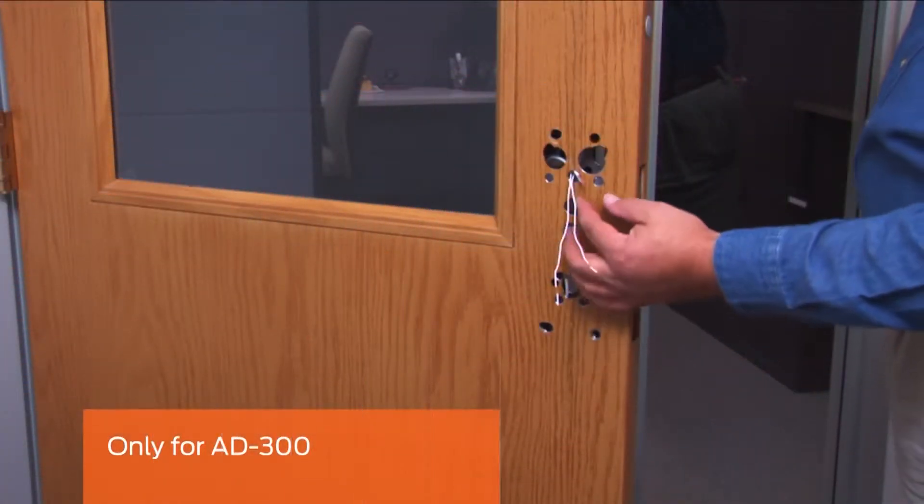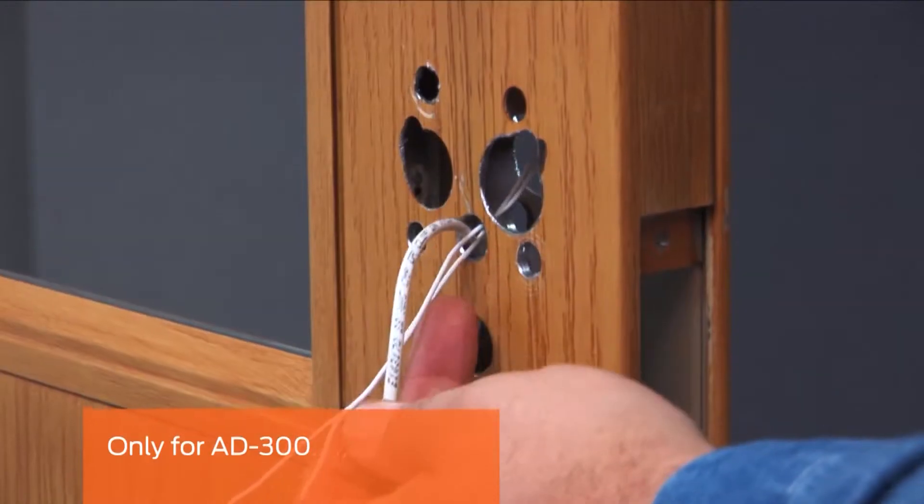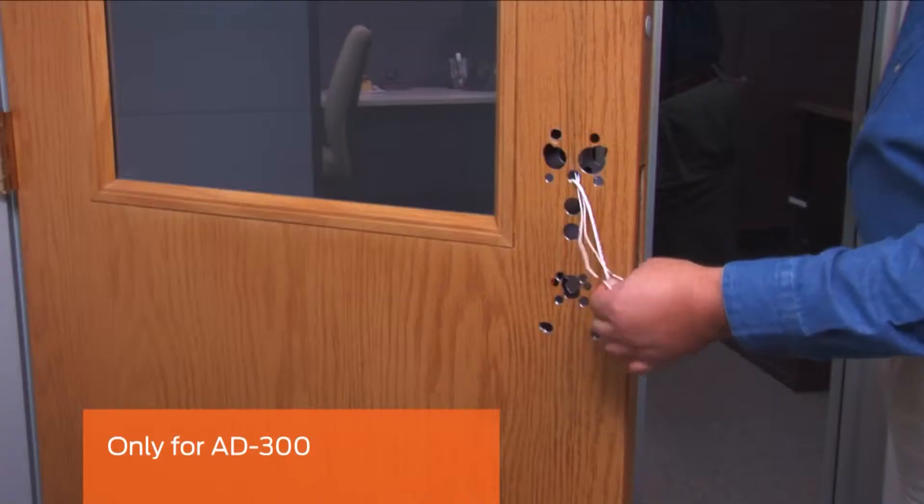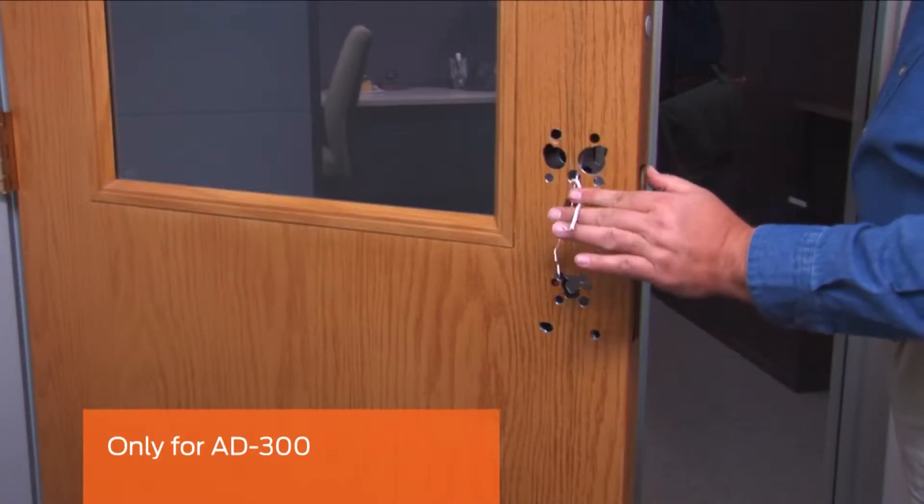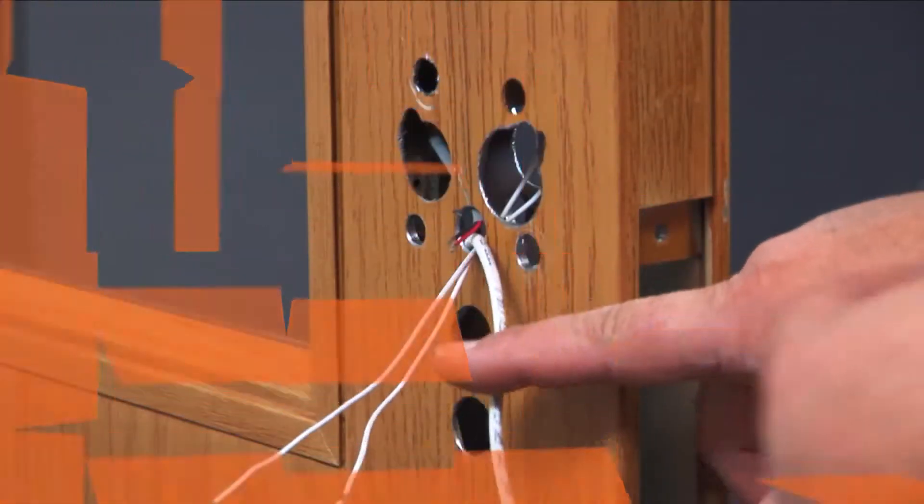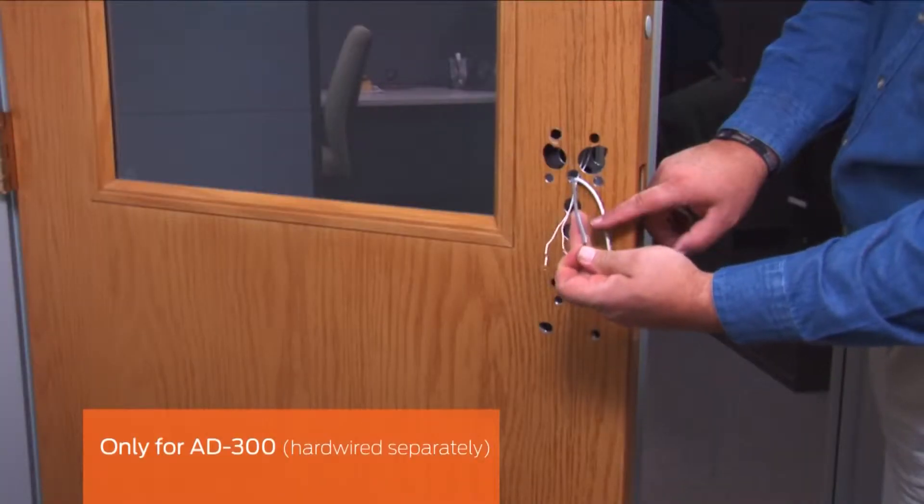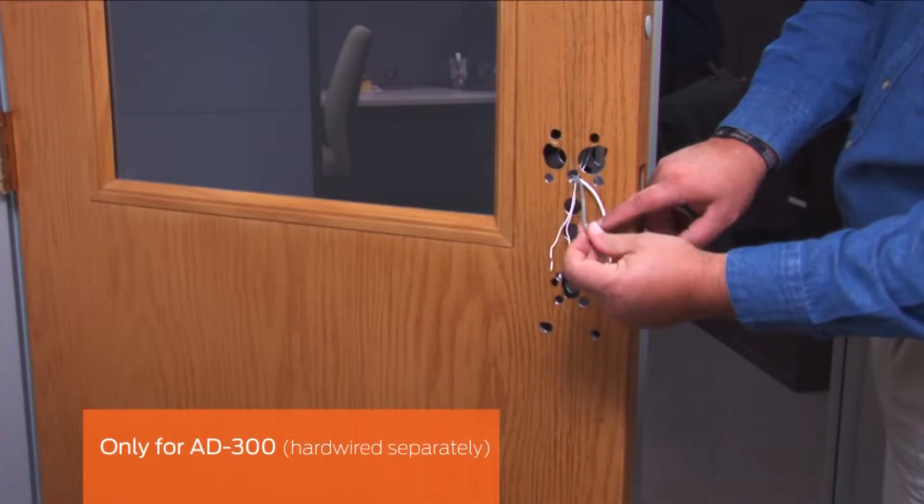This next step is only for the AD300. Ensure your power supply is turned off. Pull the RS-485 cable through the same upper hole on the inside of the door. If your AD300 is hardwired separately, pull the two power wires through the same upper hole on the inside of the door.